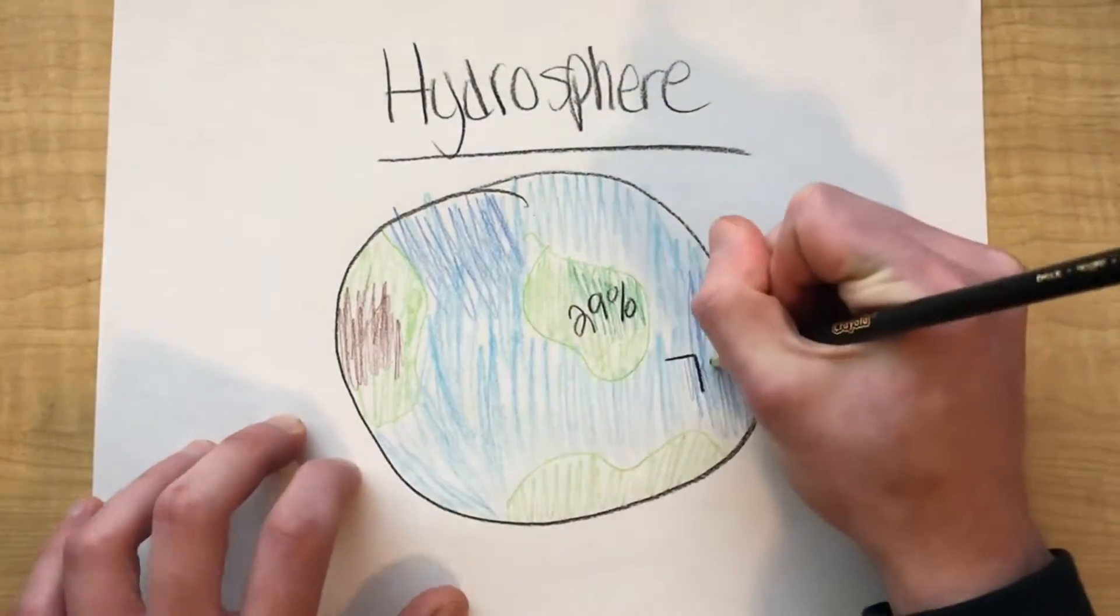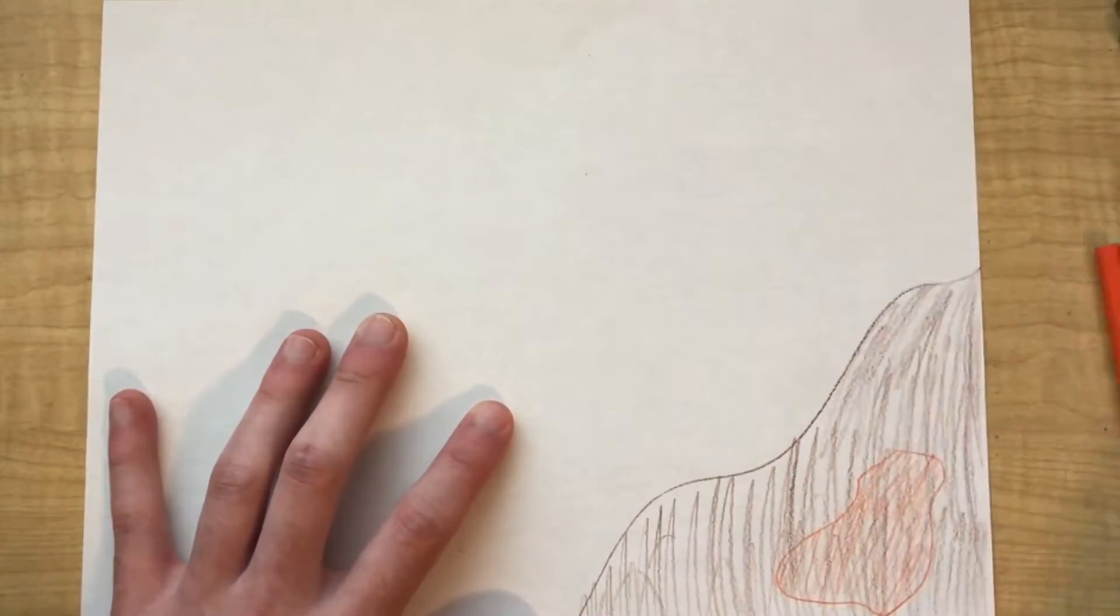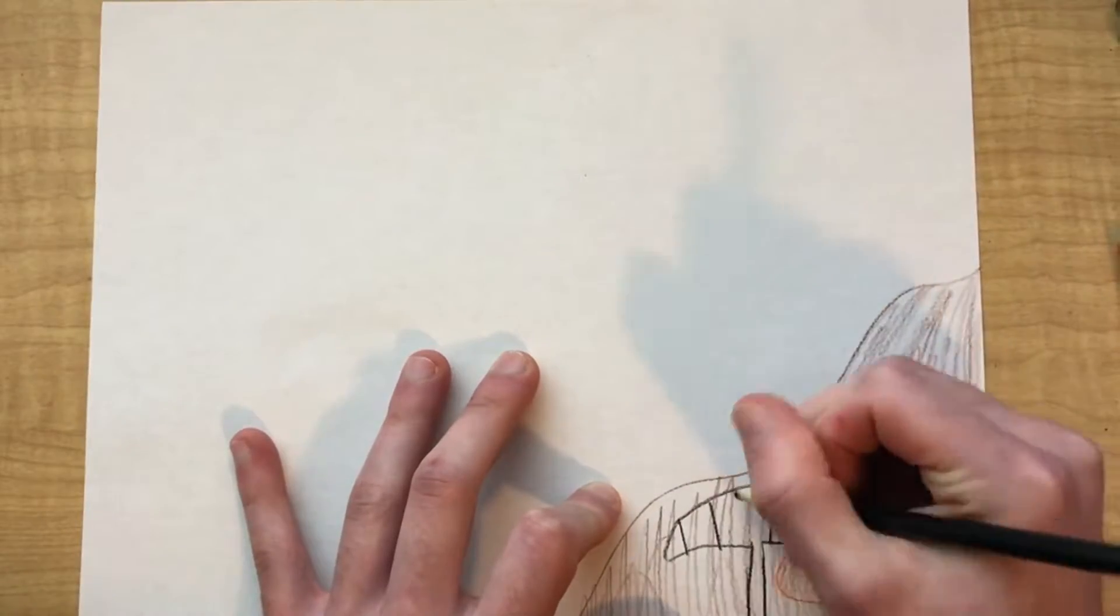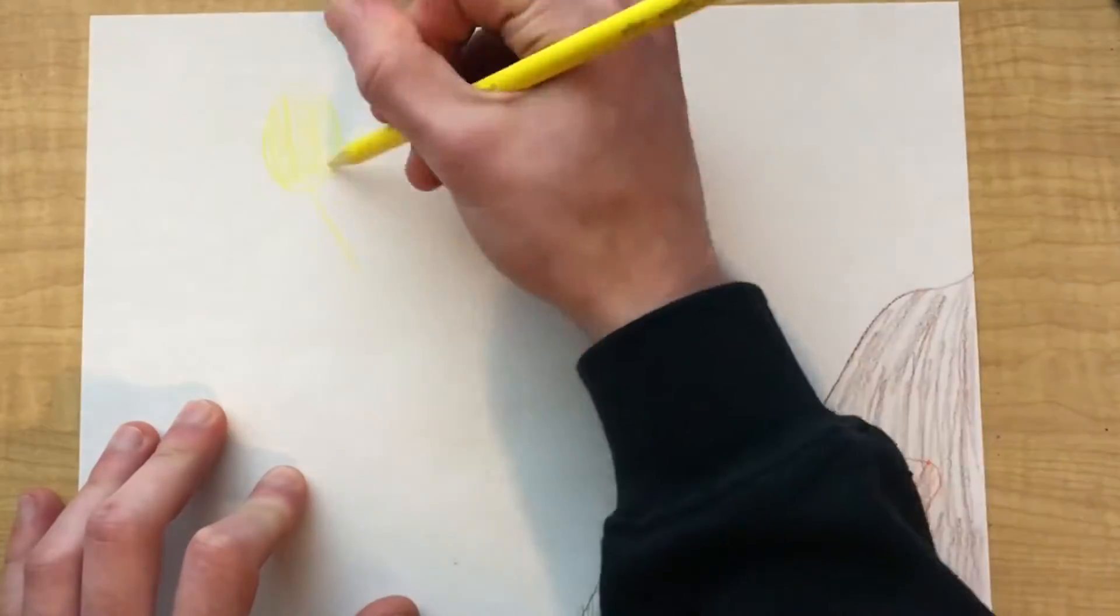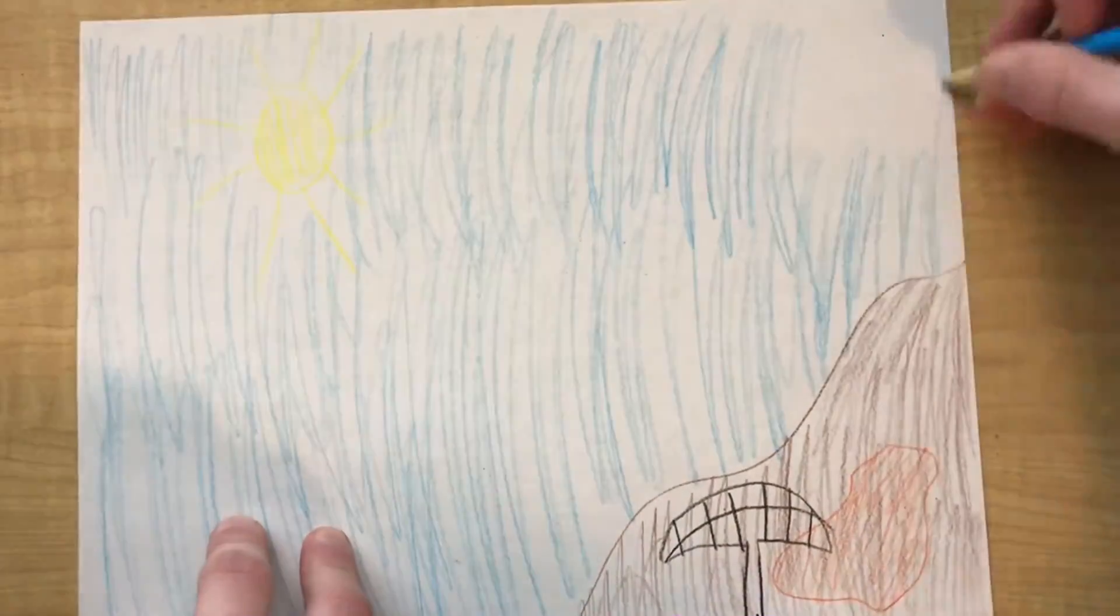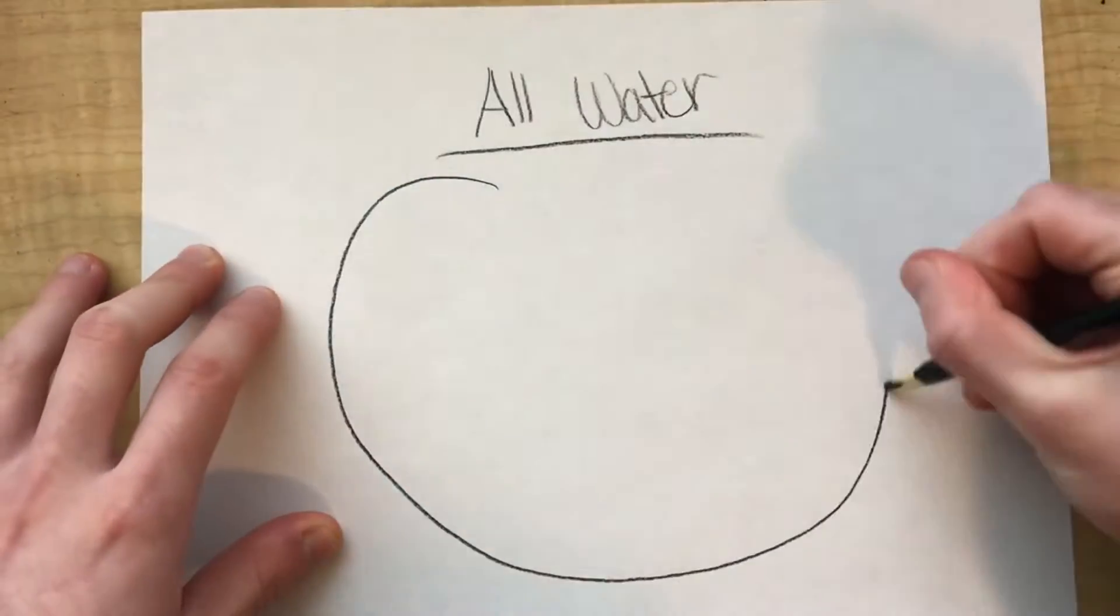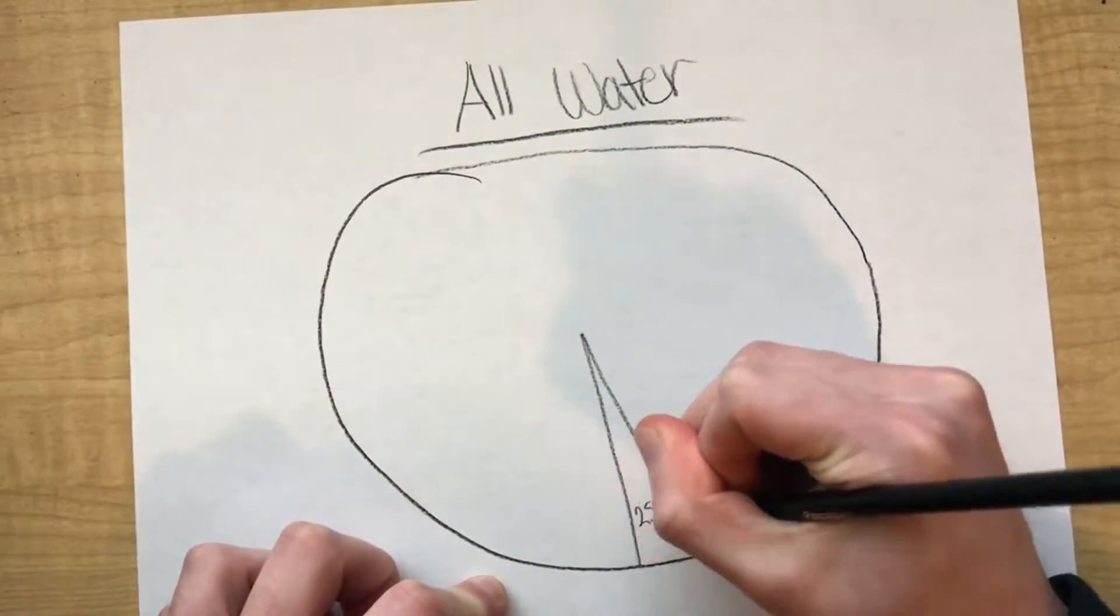So 71% of our earth is covered in water, and if you had to guess where most of that 71% of water was on the earth, where would you guess? If you guessed the ocean, you would be correct. Our oceans make up around 97.5% of the water on earth. This means only 2.5% of our planet's water is stored in other places other than our oceans.